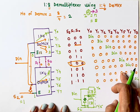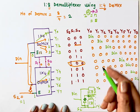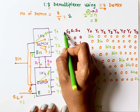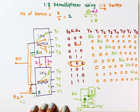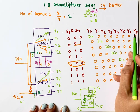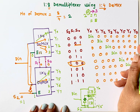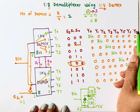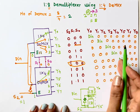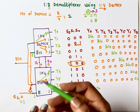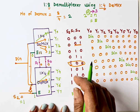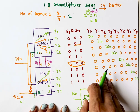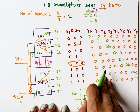The truth table will also change accordingly — you will need to add S3 as the 4th select input, and the outputs will extend from Y8 through Y15 beyond Y7. Thank you so much for watching this video. Please subscribe to my channel and share this video with your friends. Thank you.